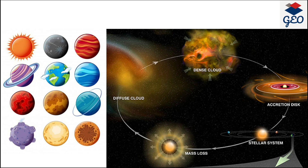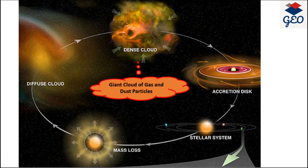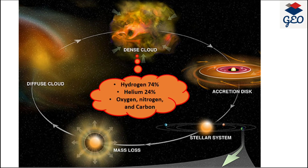The same cloud here is referred to as the nebular cloud, which is a mixture of dust particles. According to the Big Bang Theory, the origin of the universe began around 13.5 billion years ago, but the formation of the sun and stars began around 5 billion years ago from a giant spinning cloud composed of gas and dust particles. This cloud is composed of mainly 74% hydrogen, 24% helium, and the remaining oxygen, nitrogen, and carbon.